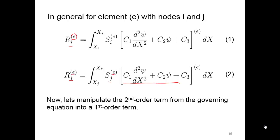A correction: this is all for element E, and element E consists of node I and node J. So the integration limits should be from the location of node I to the location of node J — not J to K as previously stated. With that correction noted, we're going to take this second-order term and convert it to a first-order term, and we'll see why as we continue. Keep your finger here in the notes and we'll come back to this.